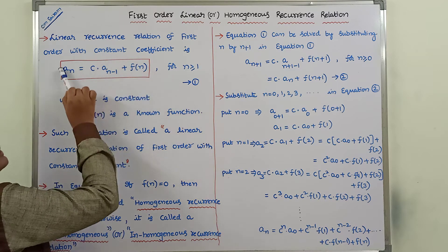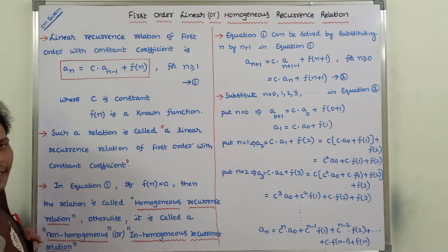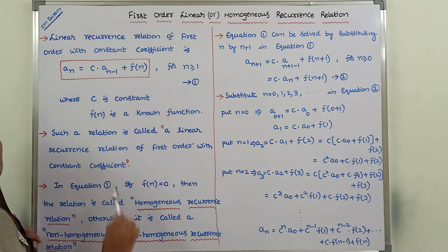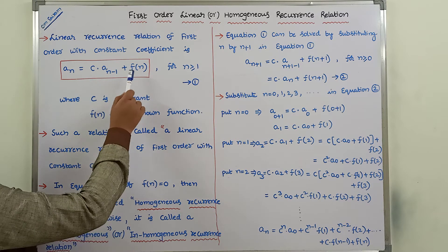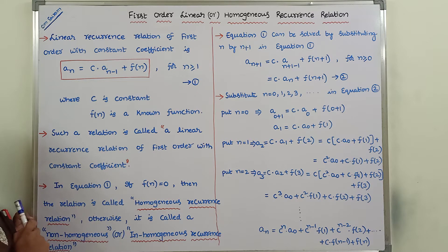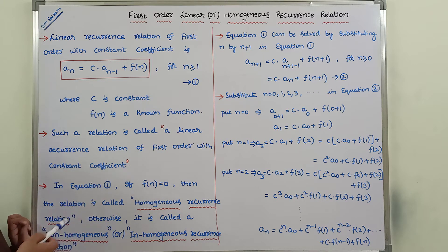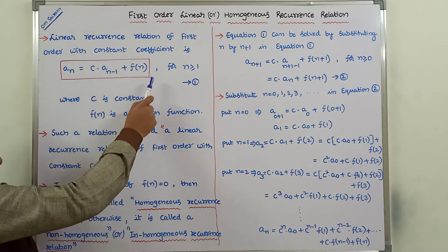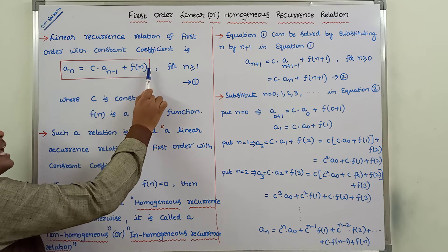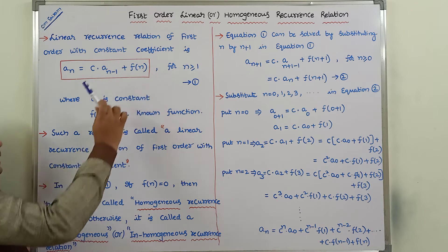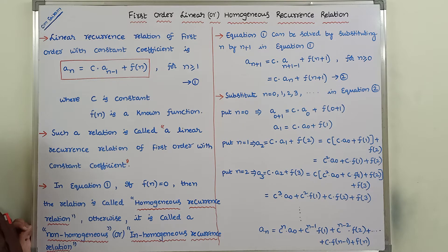In equation 1, if f(n) = 0, then it is called a homogeneous recurrence relation. If f(n) ≠ 0, then it is called a non-homogeneous recurrence relation. So recurrence relations are of two types: homogeneous and non-homogeneous, distinguished by whether f(n) equals zero or not.